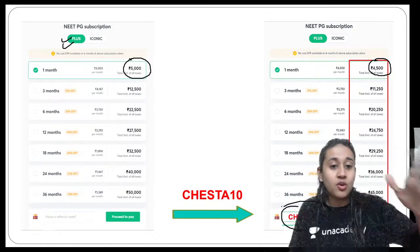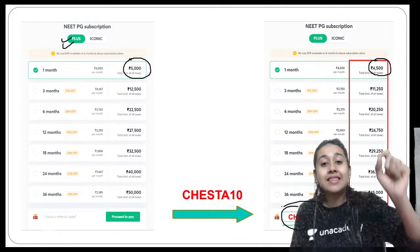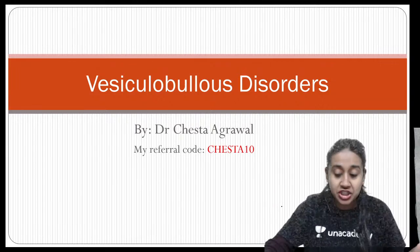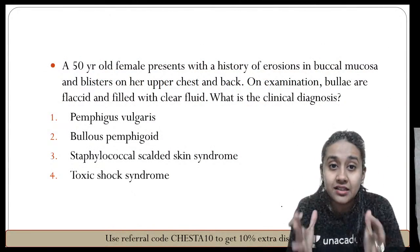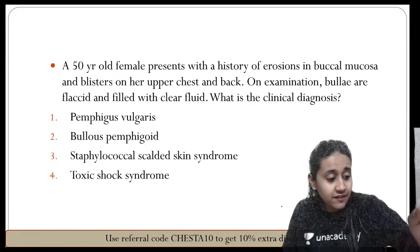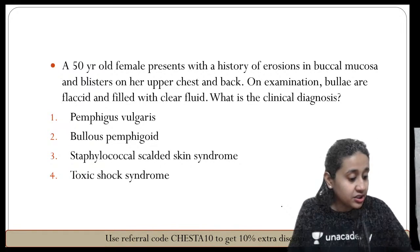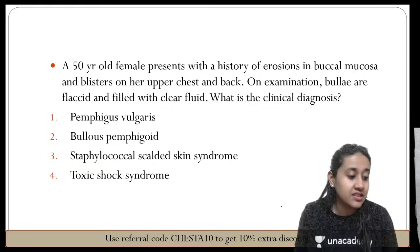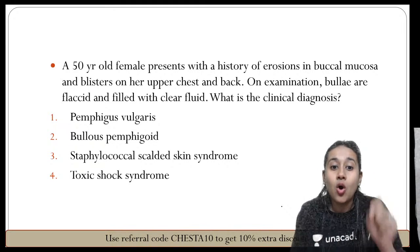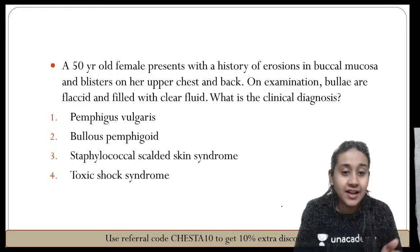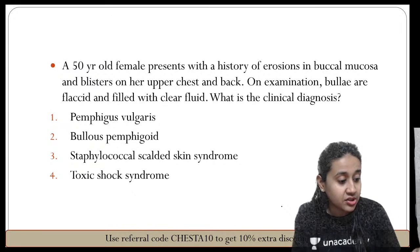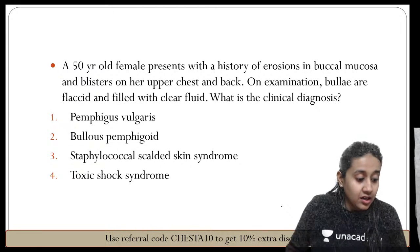Now starting with the first question to illustrate the three tips for vesiculobullous disorders. A 50-year-old female presents with a history of erosion in the buccal mucosa and blisters on her upper chest. On examination, bullae are flaccid and filled with clear fluid. What is the clinical diagnosis? Please answer this question.